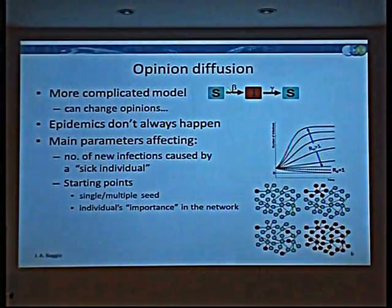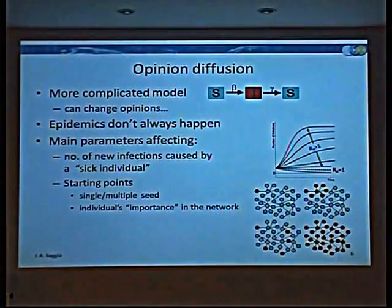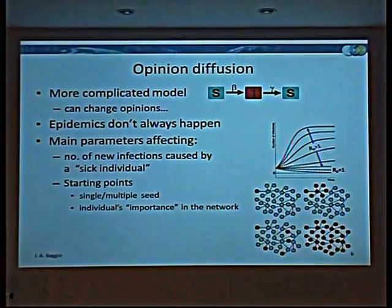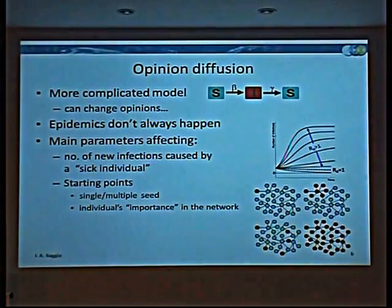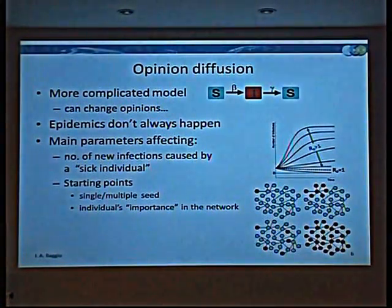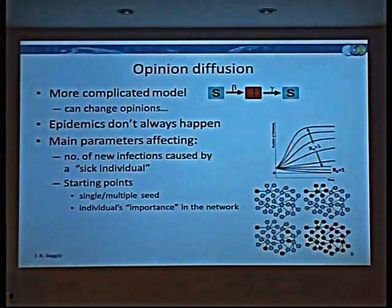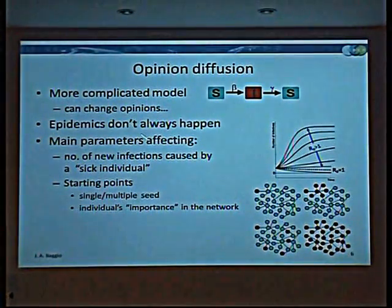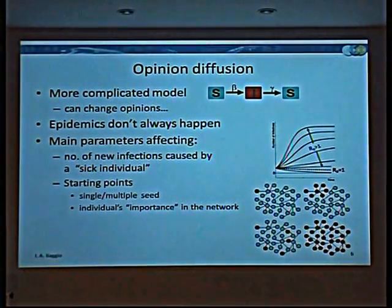And that's what we have seen before. It's an SIS model. Once I hear a rumor, I've heard it. Once I make my decision, or once I change my mind, I've changed it — I don't change my mind back. Now here I'm susceptible again to other things.